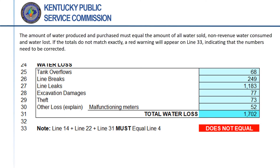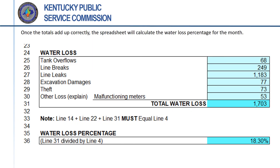If the totals for water sold, non-revenue water provided for authorized uses, and water lost do not add up to the total of water produced and purchased, an error message will appear on line 33, indicating a mismatch. One or more of the entries on the sheet will need to be adjusted to produce matching totals. Once the totals for water sold, non-revenue water for authorized uses, and water loss equal the total of water produced and purchased, the error message on line 33 will disappear and the form will calculate the correct percentage water loss for the month.